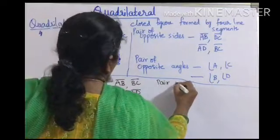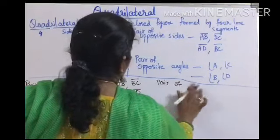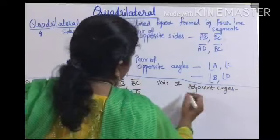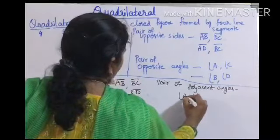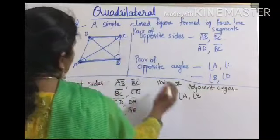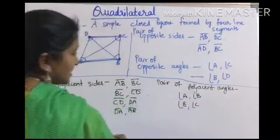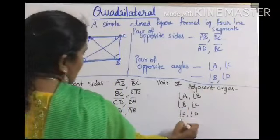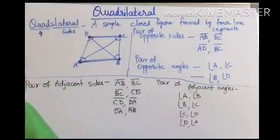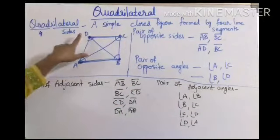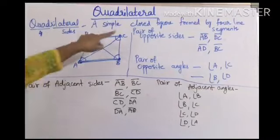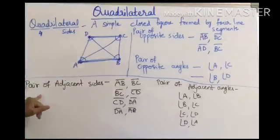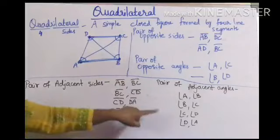Now here we write pairs of adjacent angles. Angle A is adjacent to angle B; angle B is adjacent to angle C; angle C is adjacent to angle D; and angle D is adjacent to angle A. So you get four pairs of adjacent angles. Overall, a quadrilateral has four sides, four vertices, four angles, two diagonals, two pairs of opposite sides, two pairs of opposite angles, four pairs of adjacent sides, and four pairs of adjacent angles.